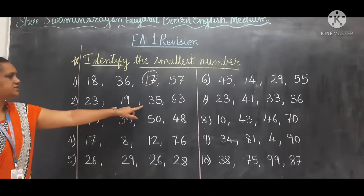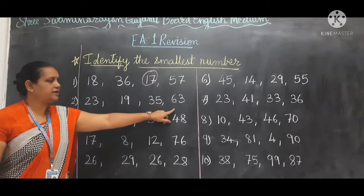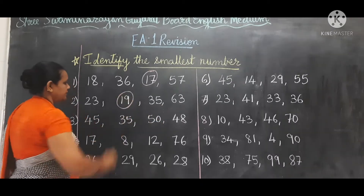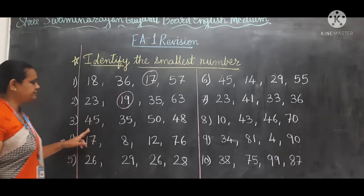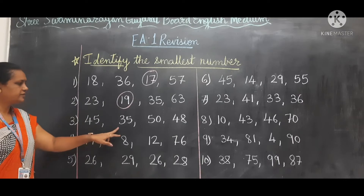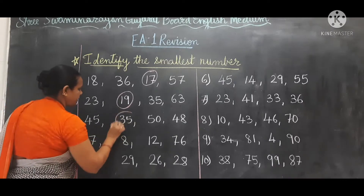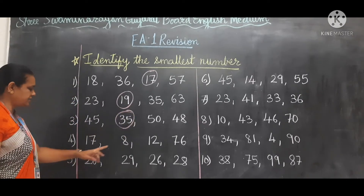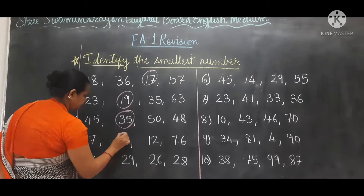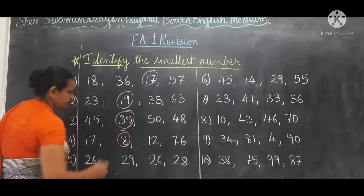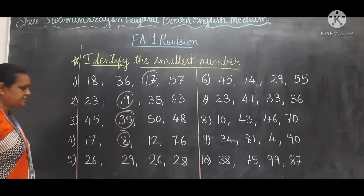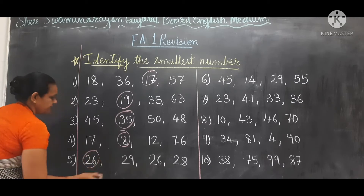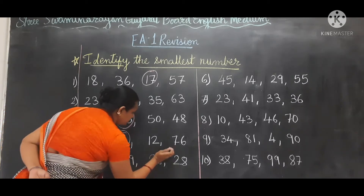Here which one is the smallest number? 19. Next which one? 35. Next: 8. Next is 26. Here, right.